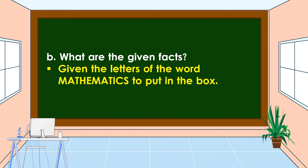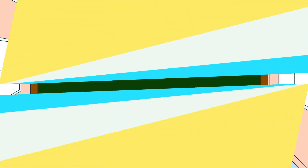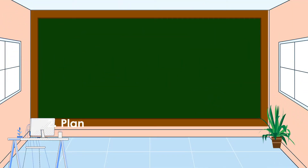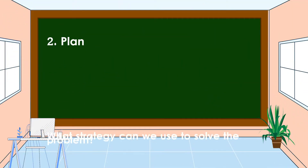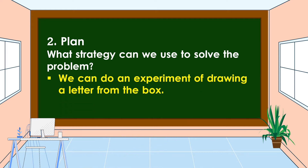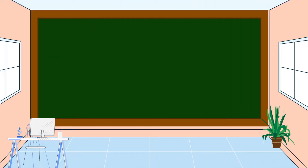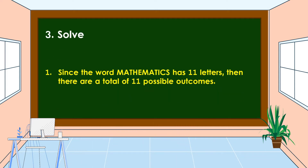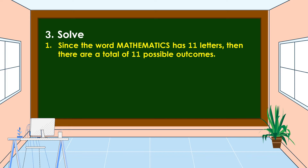The next step is we're going to make a plan. What strategy can we use to solve the problem? In this problem, we can do an experiment of drawing a letter from the box. The next step is we're going to carry out the plan. Let's solve the problem.